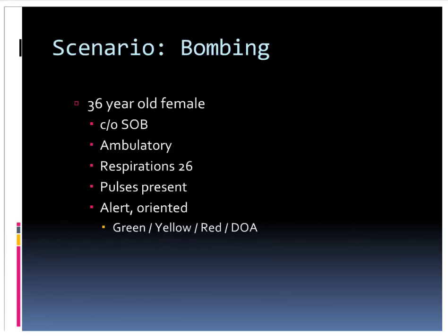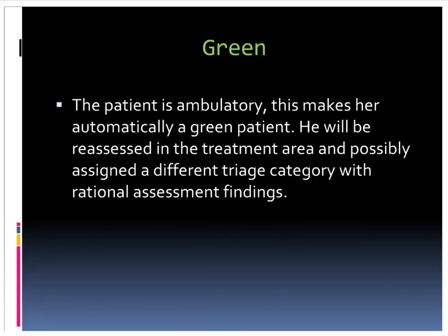A 36-year-old female with shortness of breath: able to walk, breathing 26 times per minute, has a pulse at the wrist, alert and able to follow commands. This patient is green. Again, if she's proved to actually have severe shortness of breath, she'll get reevaluated at the casualty collection point, and we'll determine if she should be upgraded to yellow or red.